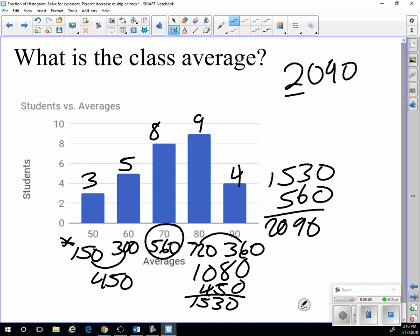there were 29 students. So the average would be 2,090 divided by 29. And that tells me 72.068. So to the nearest percent that would be 72.